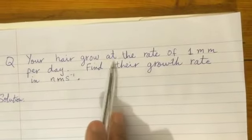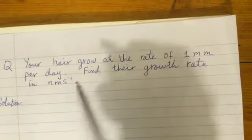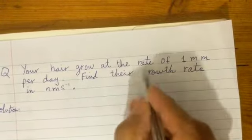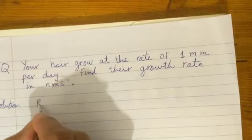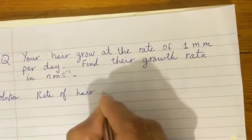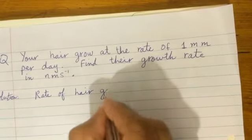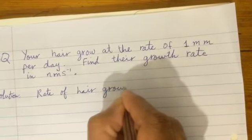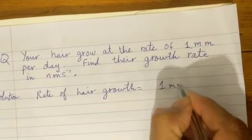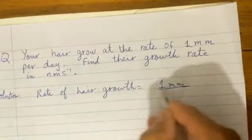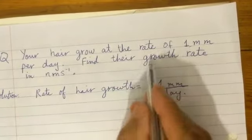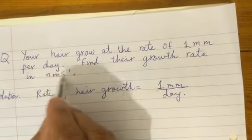The question is: your hair grows at the rate of one millimeter per day. Find the growth rate in nanometers per second. First of all, we find the rate of hair growth. The rate of hair growth is equal to one millimeter per day. Now I'm going to find the growth rate in nanometers per second.